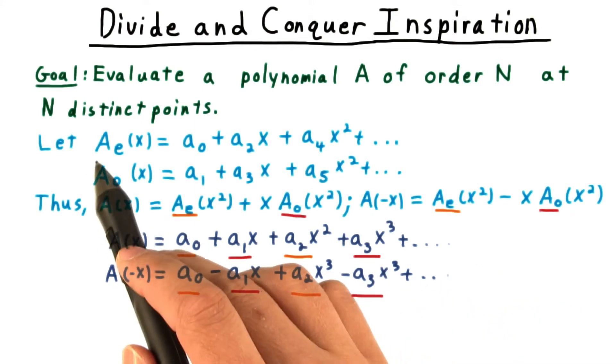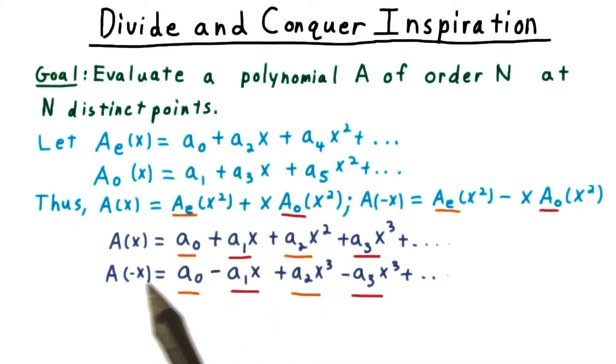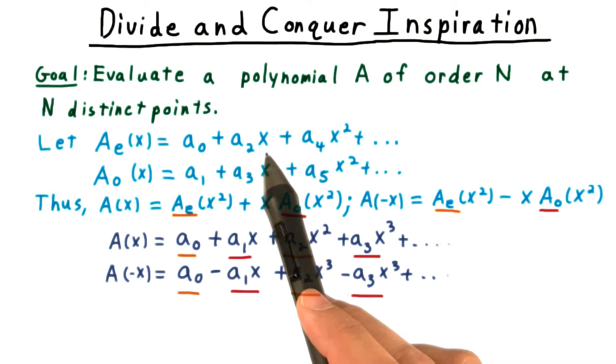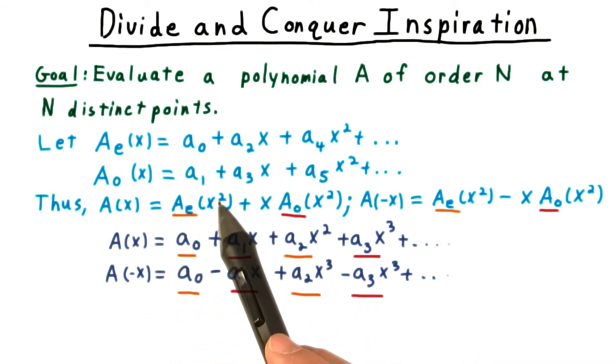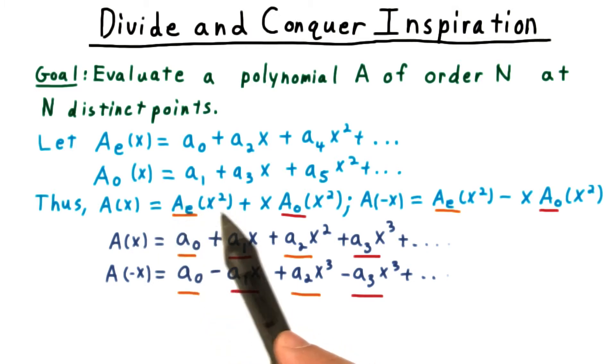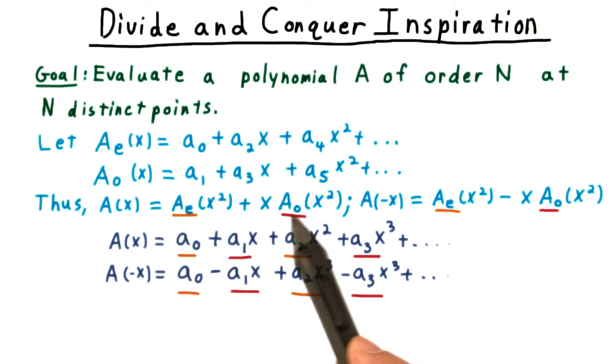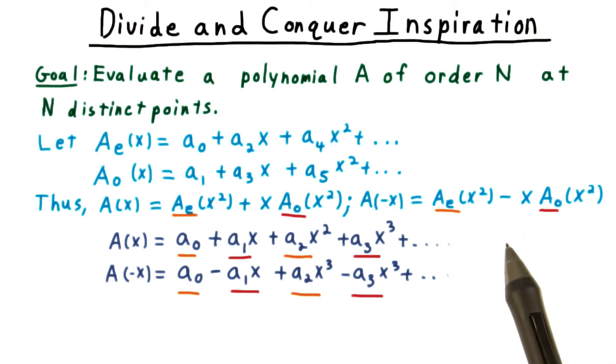With this in mind, let's define A sub e to be the polynomial whose coefficients are the even coefficients of the original polynomial A, and A sub o to be the polynomial whose coefficients are the odd coefficients of the original polynomial A. Then we can write A as A_e of x squared plus x times A_o of x squared. And we can get A of minus x just by changing this one little sign here. And essentially, we've found two values for A for the price of one.